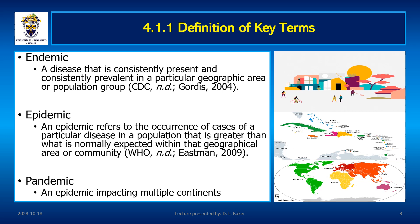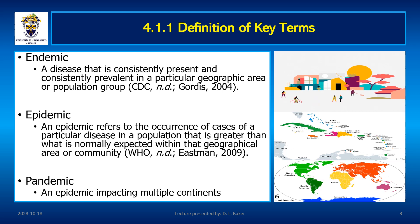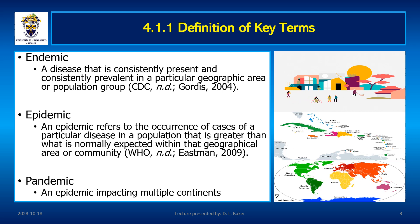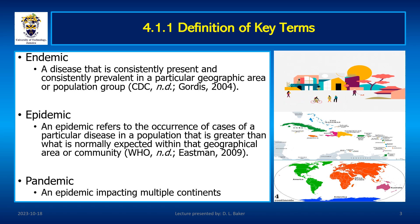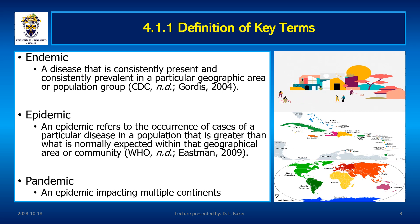A major difference between epidemic and pandemic is that epidemics are usually concentrated in one region, whereas a pandemic affects a more widespread cross-section of persons in the population. Other terms used to describe levels of disease in a community include sporadic, which refers to irregular occurrence of disease, and outbreak, often used interchangeably with epidemic but considered to be of shorter duration.